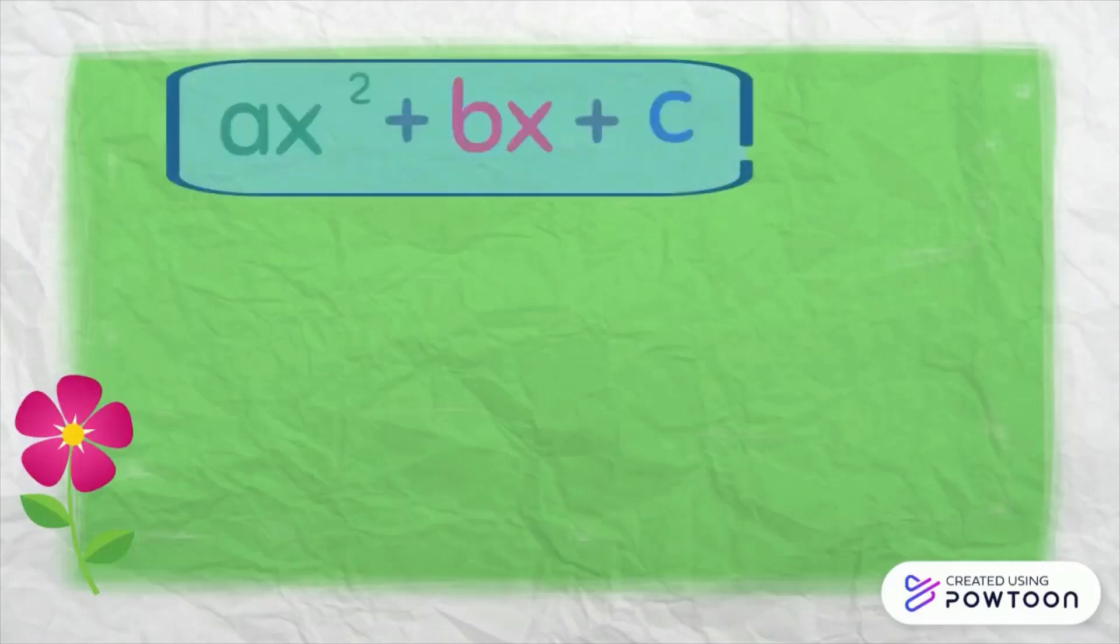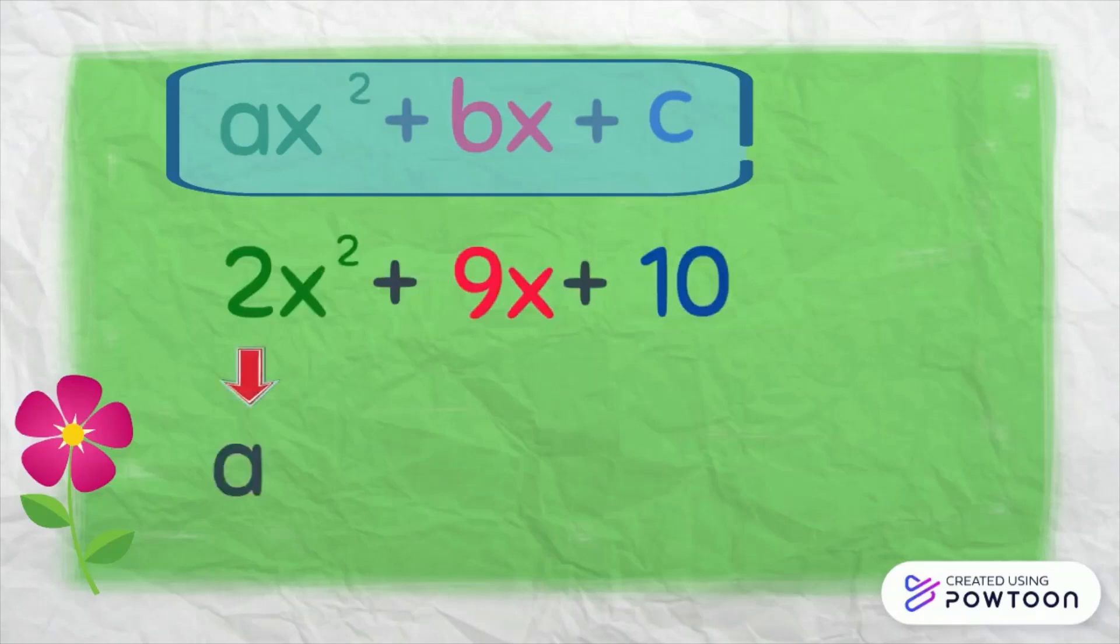The quadratic trinomial in ax squared plus bx plus c form is where the value of a is greater than 1. In this case, our a is 2, b is 9, and c is 10.